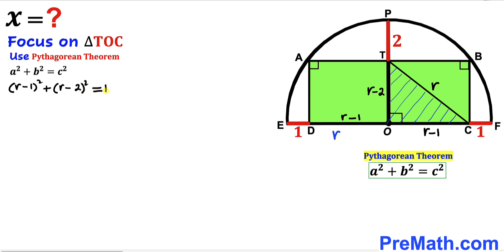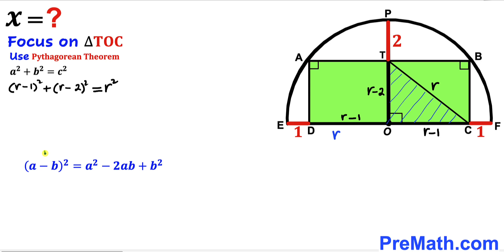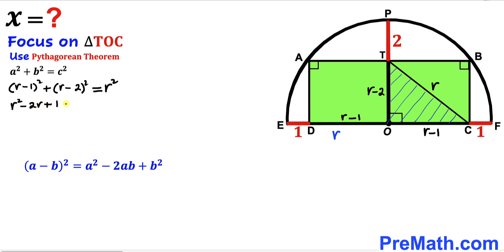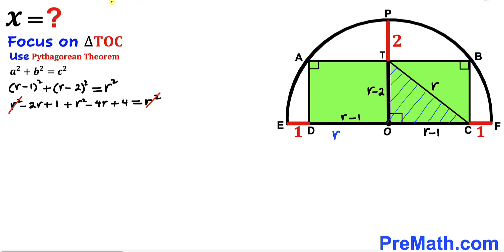Let's recall the identity (a − b)² = a² − 2ab + b² and apply this to both binomials on the left-hand side. We can write r² − 2r + 1 + r² − 4r + 4 = r². We can see the r² terms cancel, and combining like terms on the left-hand side we get r² − 6r + 5 = 0.